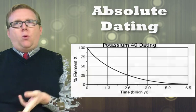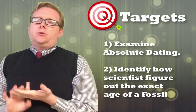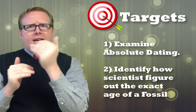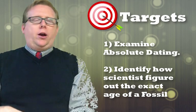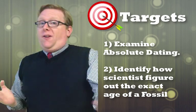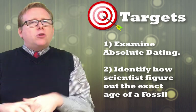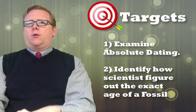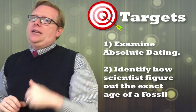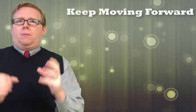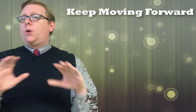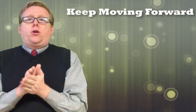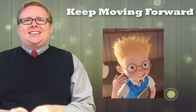Let's recap: in this video, we talked about absolute dating. Absolute dating is using half-lives and the probability of something breaking down to figure out an exact age of a rock layer, a fossil, or anything like that. We saw how scientists use half-lives and radioactive material to figure out how old layers of rock are and give absolute dates to different things. You can always hit pause if I'm moving too fast, go back and watch again, or rewind to see a part over — but always remember to keep moving forward.